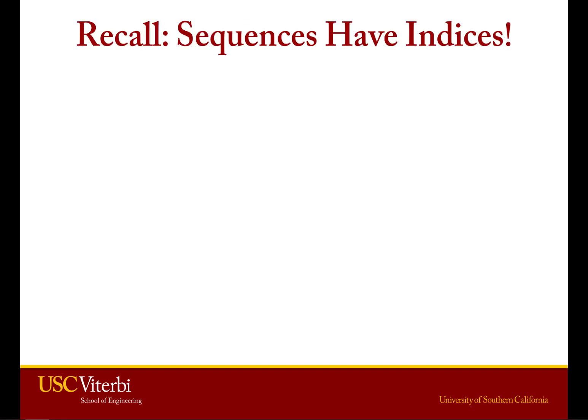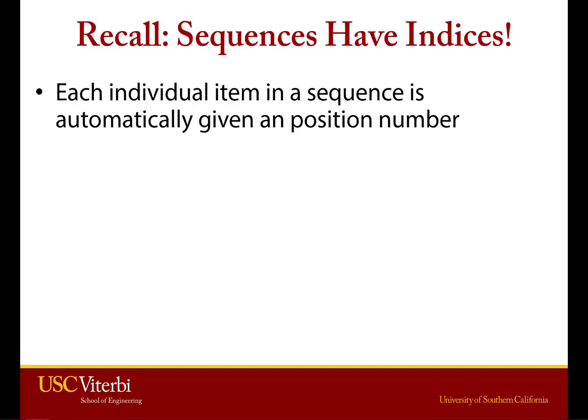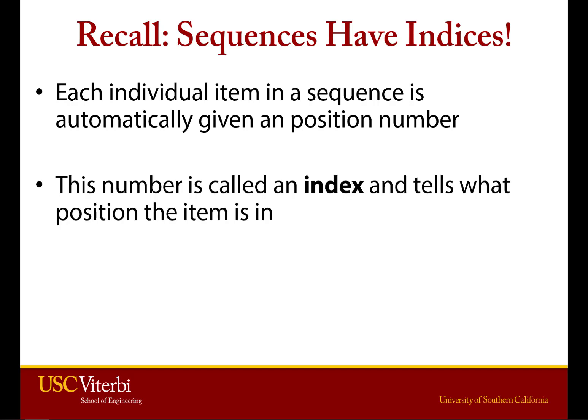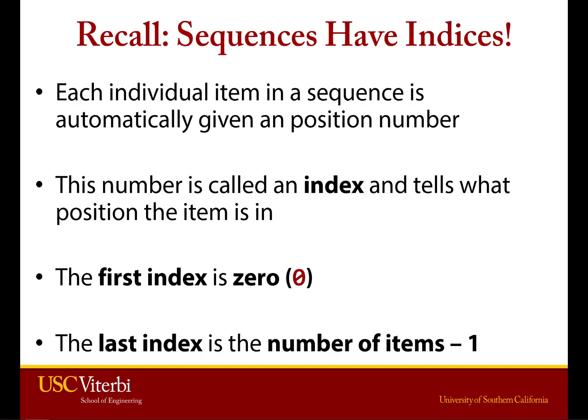Quick review. Remember that lists are sequences, and sequences have indices. So that means every item, every position in the list or in the sequence, gets a number. We call that number an index. The first count of an index in a sequence is always zero — first index is zero, not one. And that means the last index is always going to be the number of items, or the length, minus one.